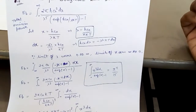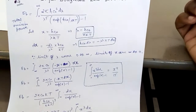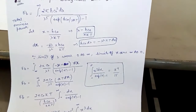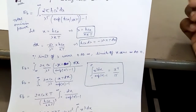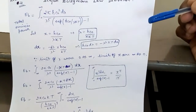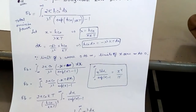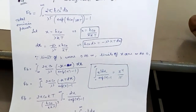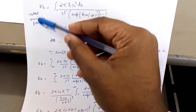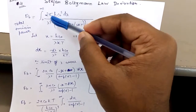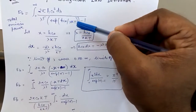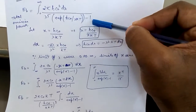If you are new to this channel, please subscribe by pressing the subscribe button below. And if you find this video helpful, please give it a big like. Now let us start. Stefan-Boltzmann law gives us total emissive power equal to the integral from 0 to infinity of 2πhc₀² dλ divided by λ⁵ times (exp(hc₀/λkT) − 1).